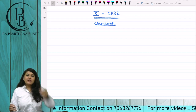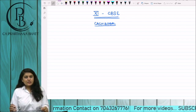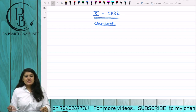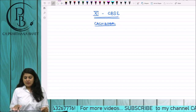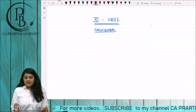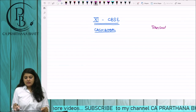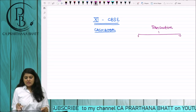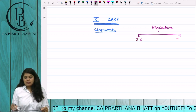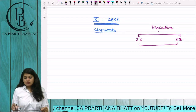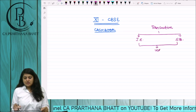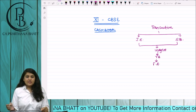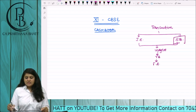Hello friends, today we are going to start with cashbook. What do we mean by cashbook? We studied this accounting process — there is a raw transaction. We write it in two ways: either in the form of journal entries or in the form of subsidiary books. Then it goes to ledgers, then trial balance, and then final accounts. When I talk about subsidiary books...